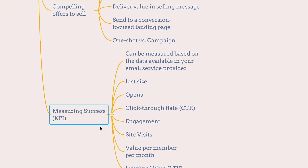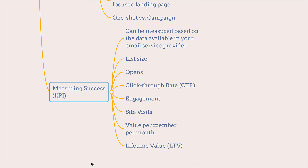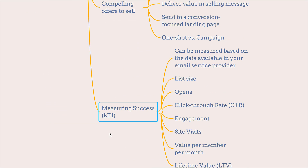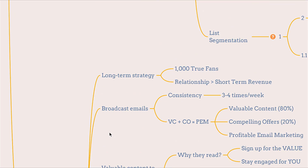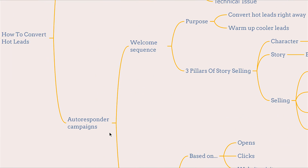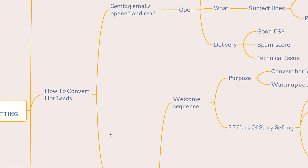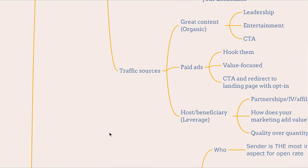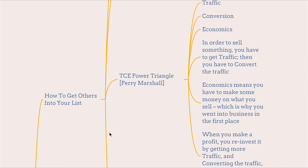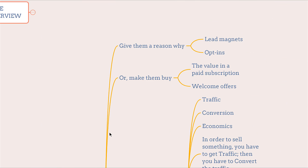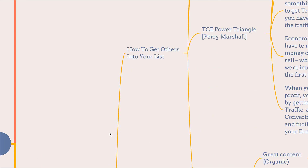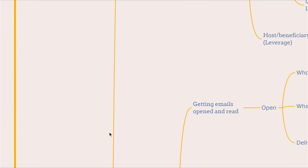When measuring success, the following factors to consider are: list size, opens, click-through rates, engagement, site visits, value per month, and lifetime value. This video basically sums up the overall outline of email marketing campaigns — details will be talked about in later videos. I hope this video was comprehensive as an introduction to email marketing.